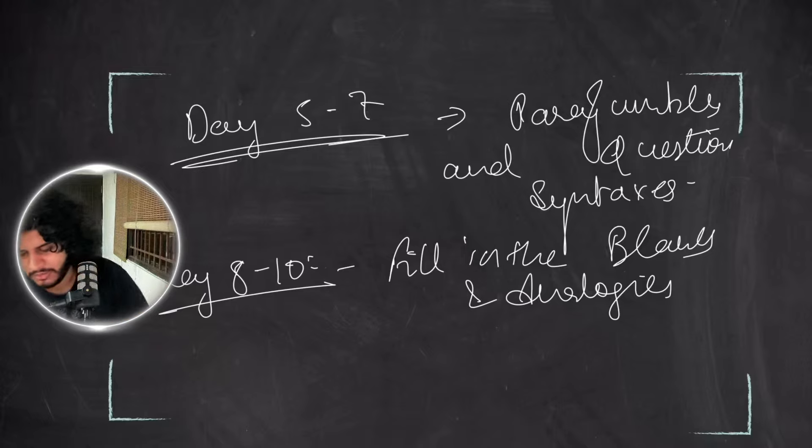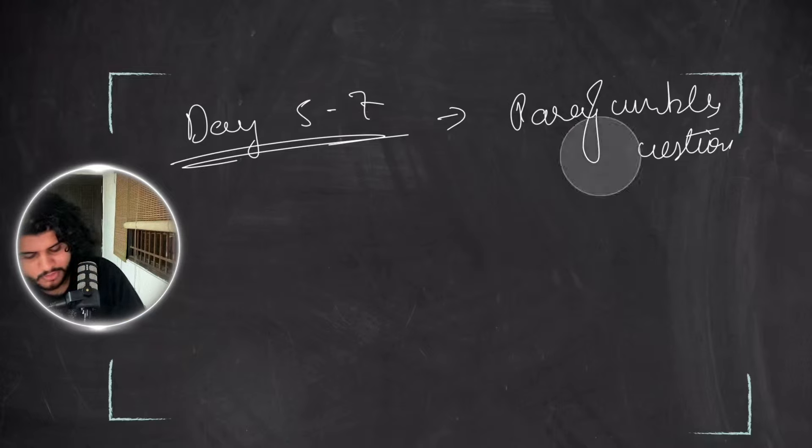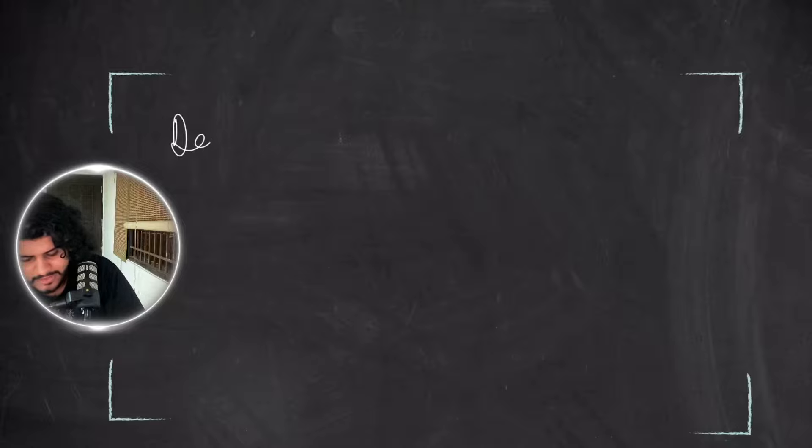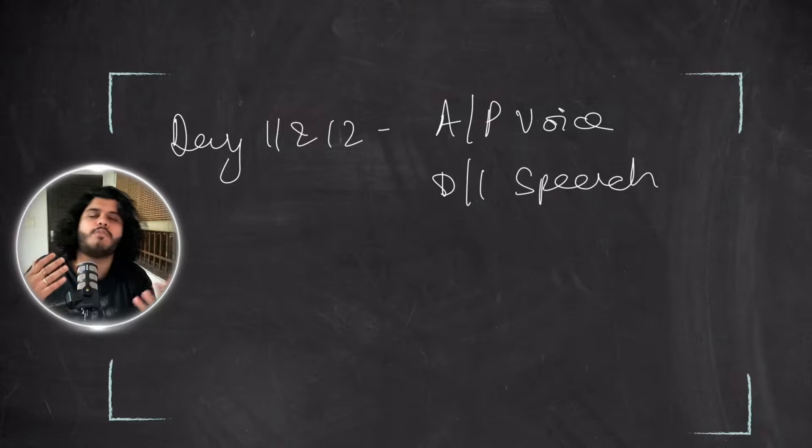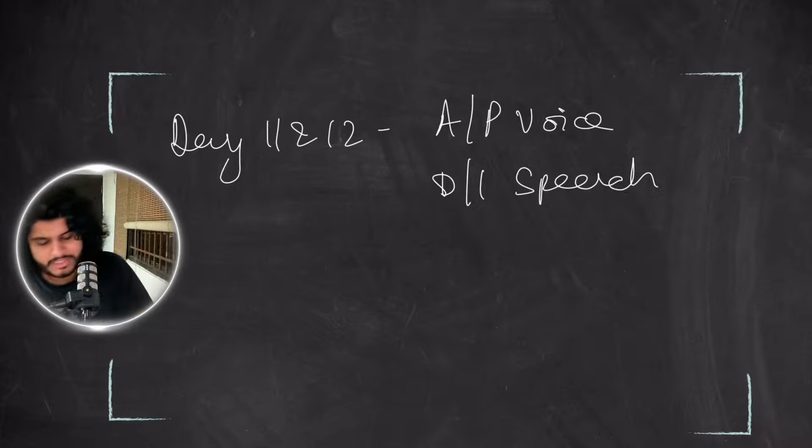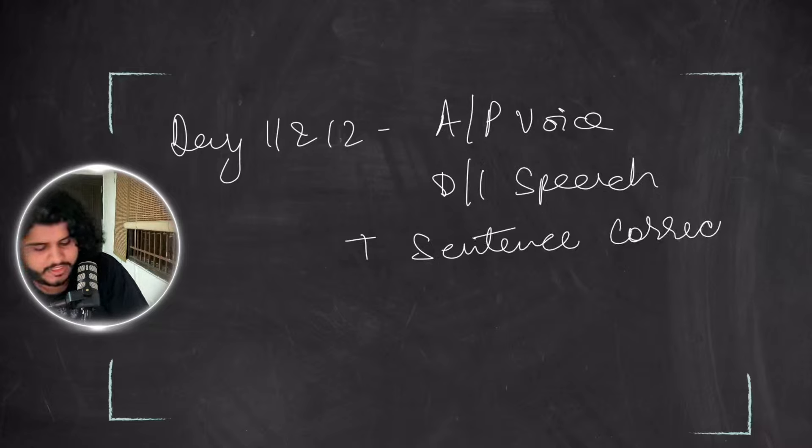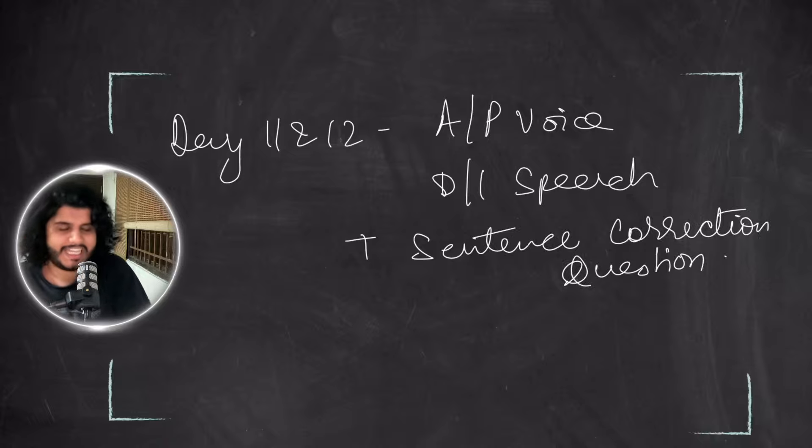Now the final lap - Day 11 and 12: We'll do active passive voice and direct indirect speech. CUET conversion includes active/passive and direct/indirect. You'll also do sentence correction questions - CUET can ask you to identify incorrect or correct sentences, spot the correct sentence, or spot incorrect sentences from a group.